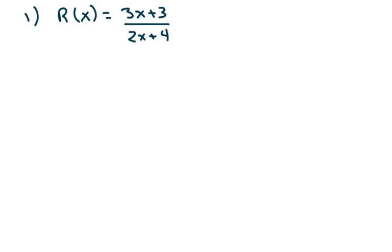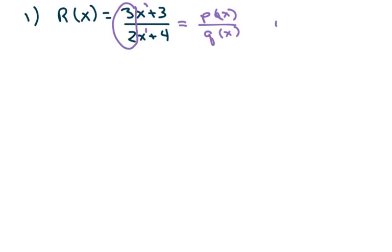In this case, we have P of X over Q of X. The degree in the numerator is one and the degree in the denominator is one. When the degrees are the same, you just divide the lead coefficients, so it's going to be Y equals 3 over 2. That's the horizontal asymptote.